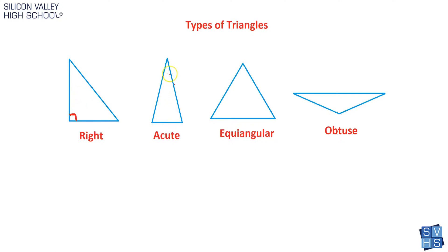As for the acute triangle, every single angle has to be acute — meaning less than 90 degrees. Not just one of them, all of them. So if a triangle has one acute angle, why isn't that an acute triangle? Because by definition, an acute triangle has to have all three angles less than 90 degrees. And you can see that these are all smaller than 90 degrees.